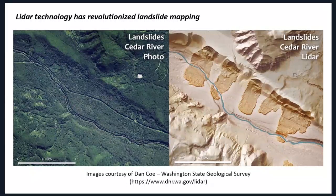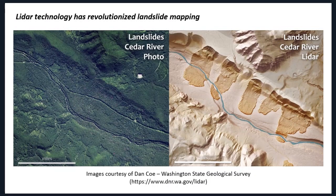Shifting gears, this slide shows an example of LiDAR topography — a remote sensing technique that allows us to see beneath the vegetation. The image on the left is an aerial photograph, and the one on the right is a LiDAR image of the same area in western Washington state. LiDAR allows us to see beneath the vegetation canopy, and in most places we look, particularly with complex topography, what we see are landslides — as this image from the Washington State Geological Survey dramatically shows.